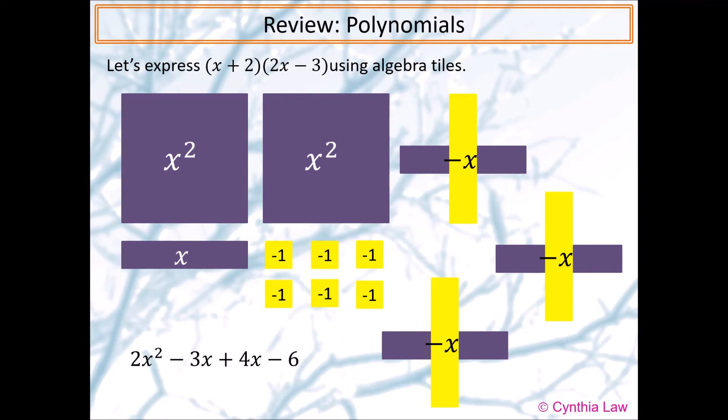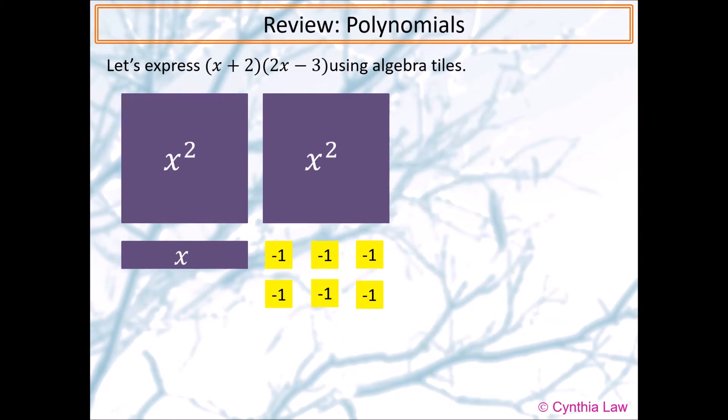Note that the sum of x and negative x is 0. So we can put them together visually like this and see that they become 0. So after simplifying, we have 2x squared plus x subtract 6 as the expanded form.